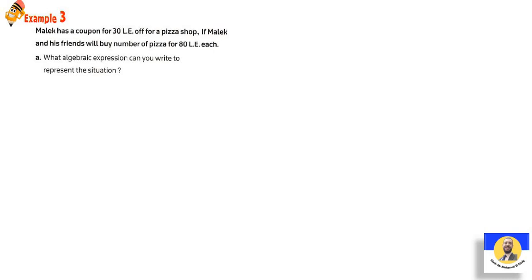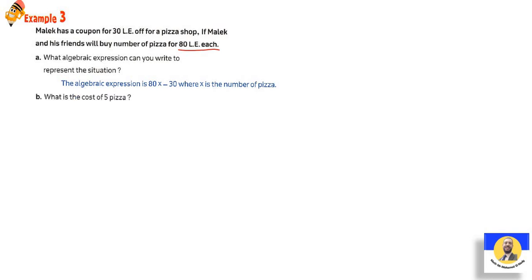Example 3 — Application: مالك has a coupon for 30 LE off at a pizza shop. مالك and his friends will buy a number of pizzas for 80 LE each. The algebraic expression = 80x - 30، حيث x هي عدد الـPizzas. طيب what is the cost of 5 pizzas؟ نبدل الـx بـ5: 80×5 - 30 = 400 - 30 = 370 LE.